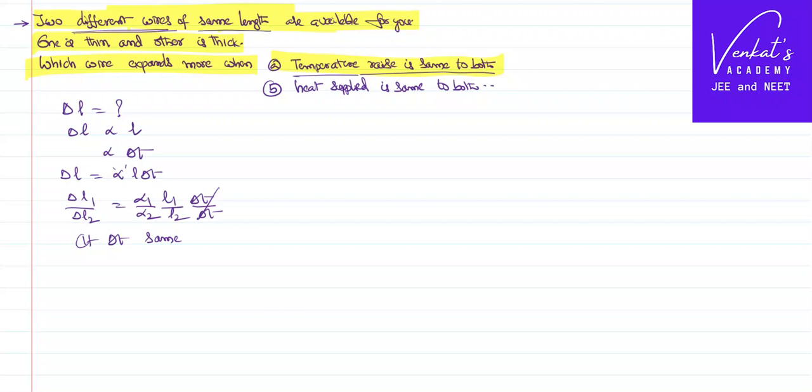It is given that wires are having same length, so L₁ and L₂ are also same, so that also will cancel. What we can say is ΔL₁/ΔL₂ equals α₁/α₂, which mean to say wire with more coefficient of linear expansion expands more and vice versa. That is the first part of the problem.